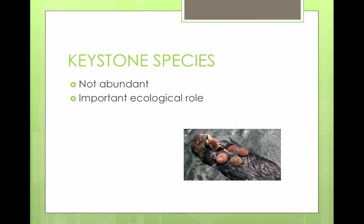A keystone species is different — it is not abundant in the ecosystem, but it is very important because it plays key ecological roles in the community. For example, sea otters feed on sea urchins, and sea urchins eat kelp, so all of them are affected by a relatively small number of sea otters.